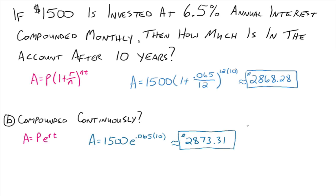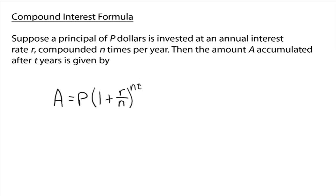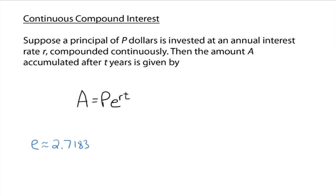All right, so that's the idea on compounded monthly or compounded continuously. A little formula here for compound interest and the one for continuously compounding interest with the e involved. And again, the continuously compounding interest formula looks exactly like the radioactive decay population growth formulas that we're going to see coming up pretty soon. All right, so that's it for now.